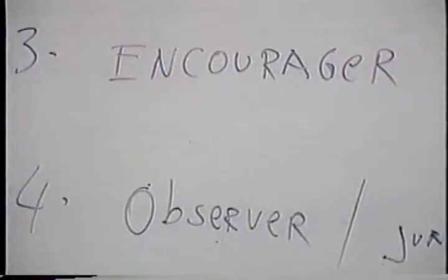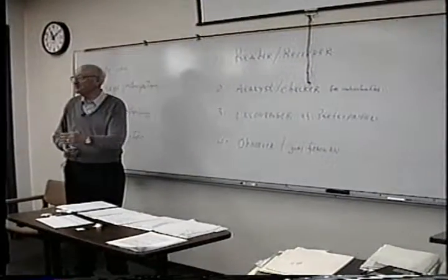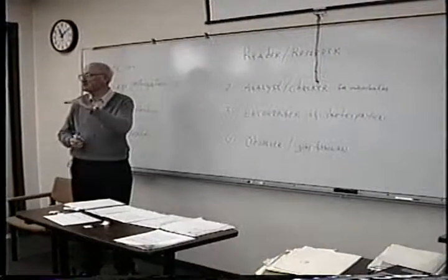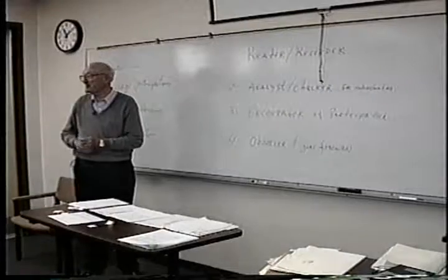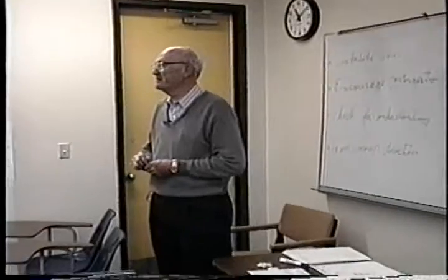Number one, you are the reader-recorder. You will read that assignment that I've given you — read it aloud to the other members so they can understand what you're saying. And then you will record, whenever there's time to record an answer, a group answer. Whenever your group decides that this evidence is probably true, true beyond a reasonable doubt, or probably false, when there's group agreement, you will add that answer to handout number one.